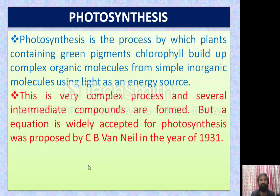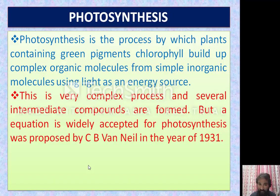Actually photosynthesis is a very complex process. Water and carbon dioxide are very simple inorganic substances. When they combine in the presence of light and chlorophyll, they form the complex organic molecule glucose. It is not a single reaction, because photosynthesis is a very complex process. First, the plants grab the light energy, that light energy is converted into chemical energy, and this chemical energy is utilized for the conversion of carbon dioxide into carbohydrate. That is why many intermediate compounds are formed during this process.